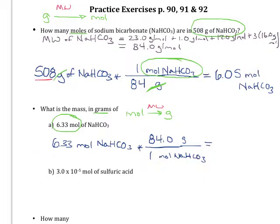Notice that this conversion factor is opposite, and that makes sense because we're going in the opposite direction. Our moles cancel, leaving us with units of grams. Watching significant figures of three, we end up with a final answer of 532 grams of sodium bicarbonate.